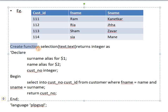First, we write CREATE FUNCTION followed by the function name, which we call 'selection'. We pass two arguments of type TEXT, because the user provides a first name and last name. After that, the RETURNS keyword specifies the return type. Since we need to return a customer ID, the return type is INTEGER. Finally, we provide the AS keyword to begin the function body.